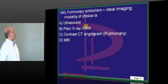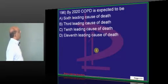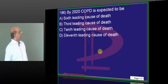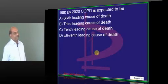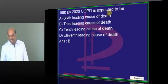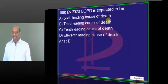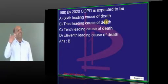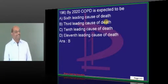Pulmonary embolism what is the best method? CT angiography. Third. By 2020, COPD is expected to be? Third leading cause. Currently? Definitely. Definitely it should be more than third. More than third means not behind third, ahead. First or second it may be. We need to check that.